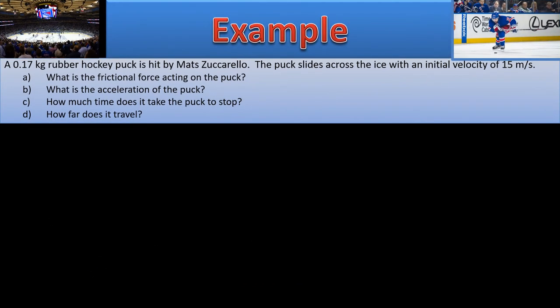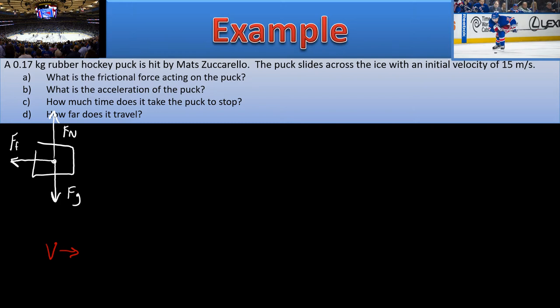The first step is to draw a free body diagram. We have the weight of the puck and the normal force between the puck and the ice. Let's assume that the velocity is to the right. What direction would the frictional force be? The frictional force opposes the motion, so it's going to the left. And the frictional force — is that static or kinetic? You're moving, you're sliding, so it's going to be kinetic.